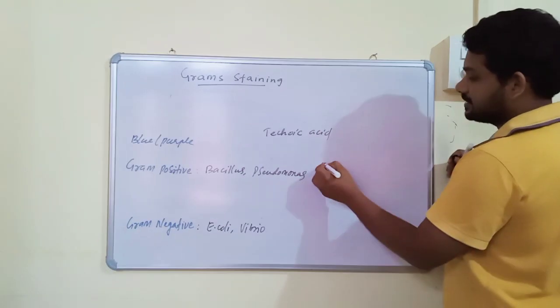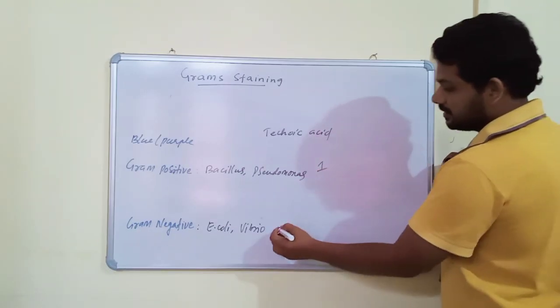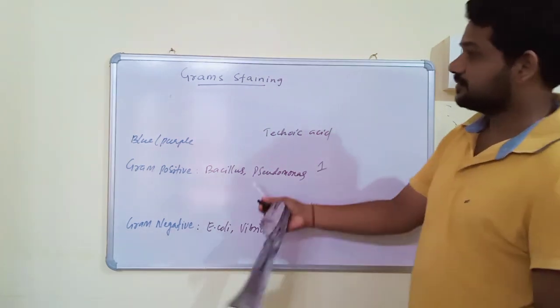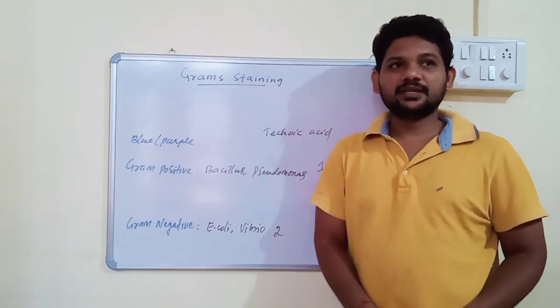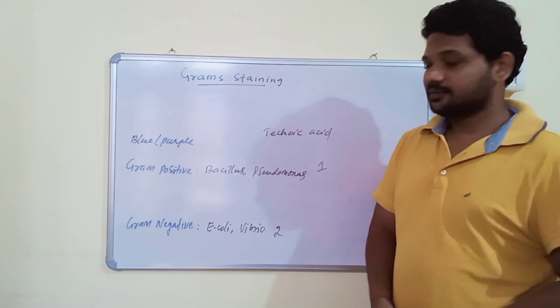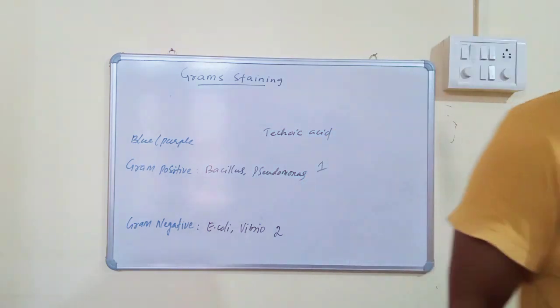Gram positive bacteria cell wall has only one layer. Gram negative bacteria has two layers. So these are the two important differences between Gram positive and Gram negative bacteria. These are some of the extra important points from the kingdom Monera.